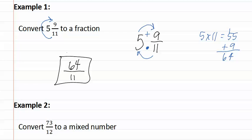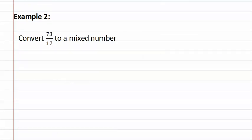Let's look at example two next. In example two, we are converting this fraction to a mixed number. Remember, we simply do this by dividing. Remembering that the fraction bar actually means divide, so we have seventy-three divided by twelve.